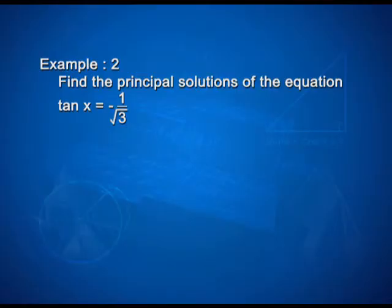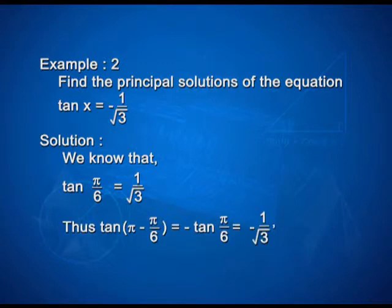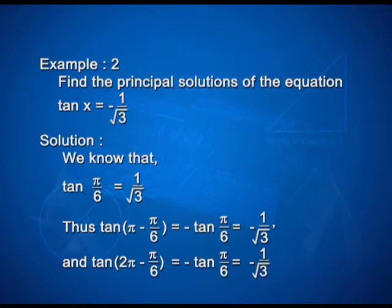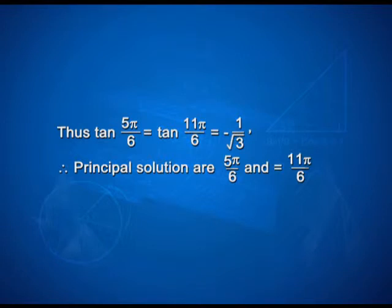Let us take one more example: find the principal solutions of tan x = 1/√3. We know that tan(π/6) = 1/√3. Now, tan(π − π/6) = −tan(π/6) = −1/√3, and tan(2π − π/6) = −tan(π/6) = −1/√3. Thus, tan(5π/6) = tan(11π/6) = −1/√3. Therefore, the principal solutions are x = 5π/6 and x = 11π/6.